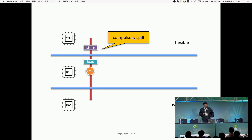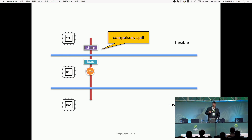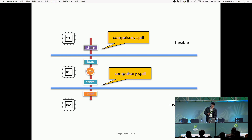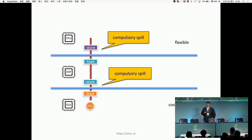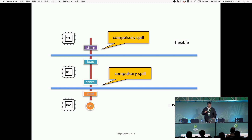The same story happens again: we find that DLA is more cost-effective than the DSP. So we do the same optimization — we try to pull down the convolution to the right place. We call this behavior 'compulsory spill.' The term is borrowed from the cache-coherence protocol, where we say we got a compulsory miss. Here we borrow the same idea and say we got a compulsory spill: we have to move the convolution to the most cost-effective processing unit.